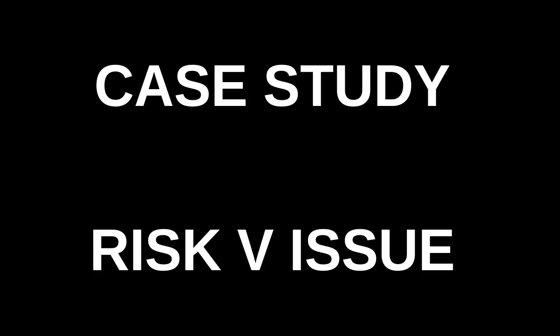In this software development project, a risk might be the potential for a security vulnerability in the code, while an issue could be a critical bug found in your current build. The risk requires a mitigation plan like regular code reviews, whereas the issue demands immediate troubleshooting and fixing.